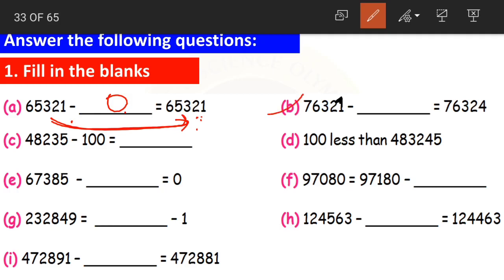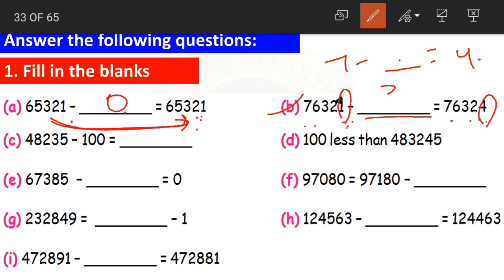Question B: 76,327 minus dash equals 76,324. If we observe, the only change is in the ones place. We have 7 minus dash equals 4, so 7 minus 3 equals 4. Therefore 76,327 minus 3 equals 76,324. The only difference has come in the digit in ones place.